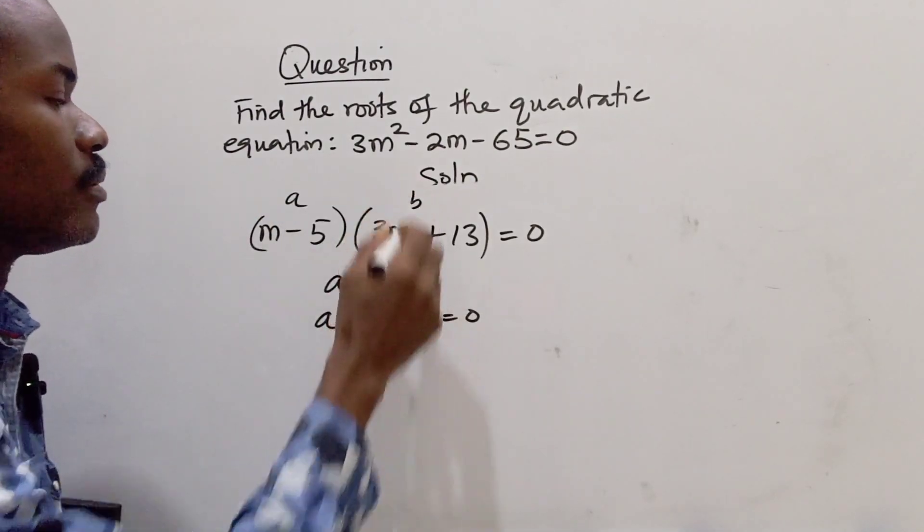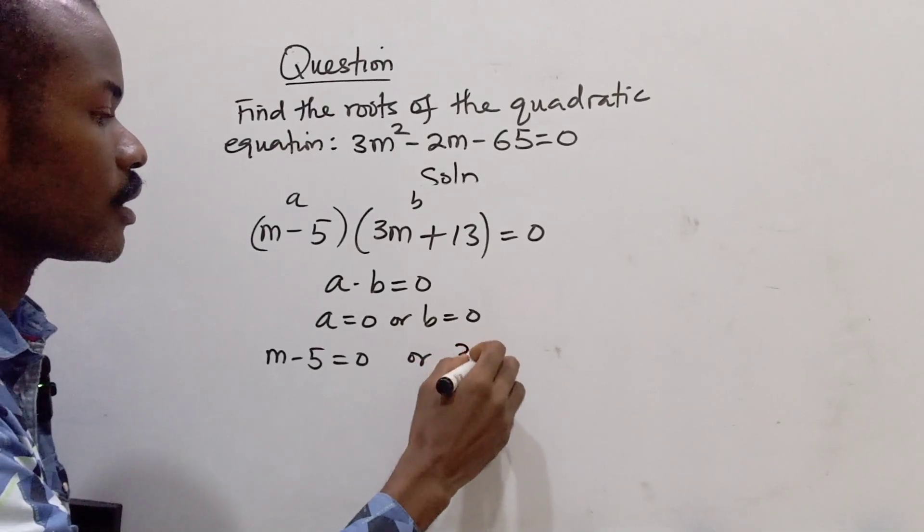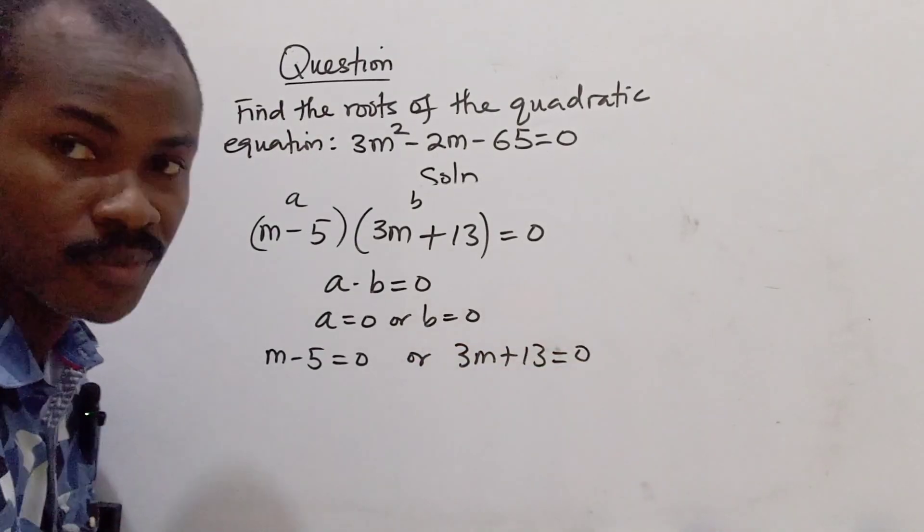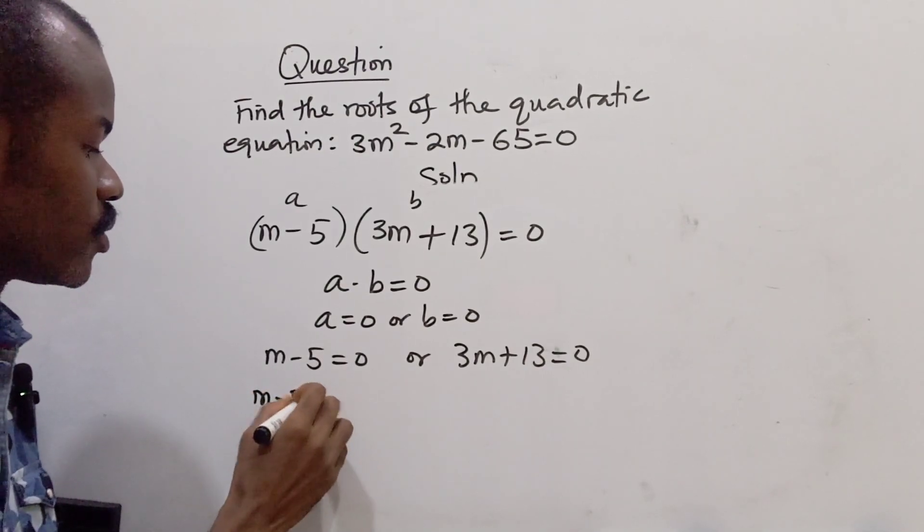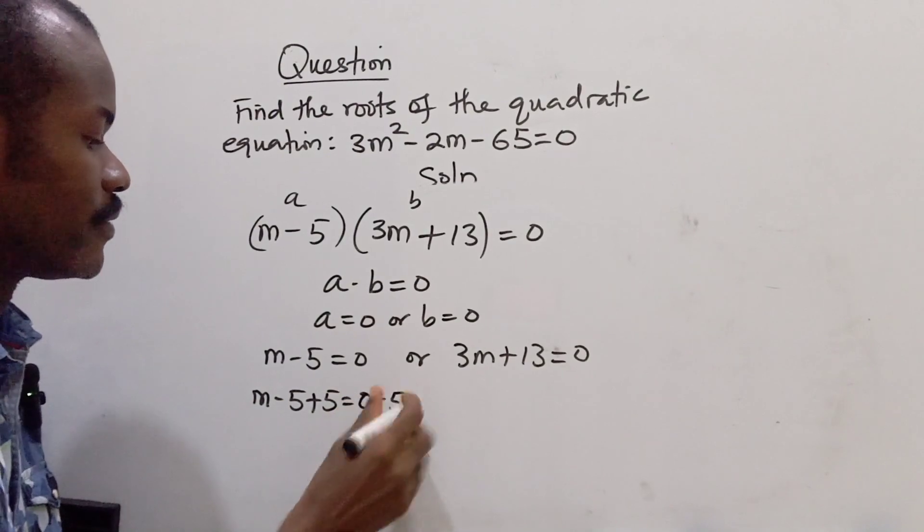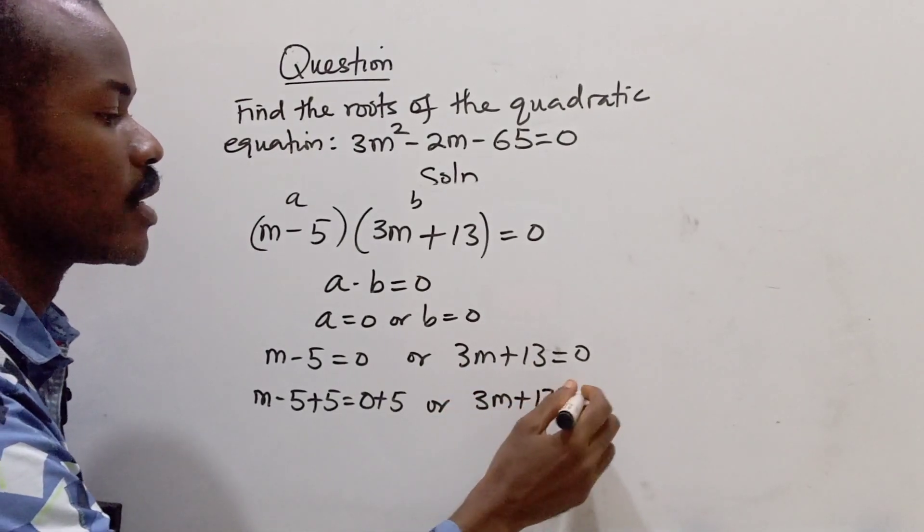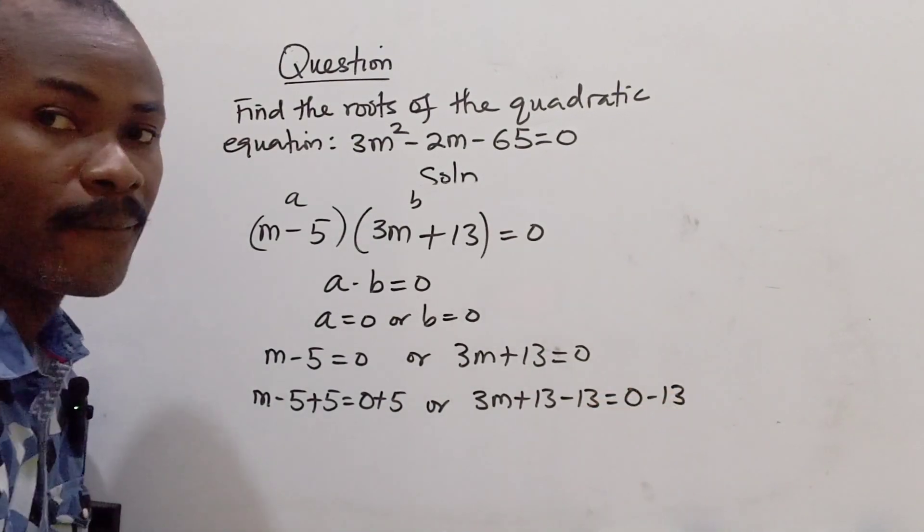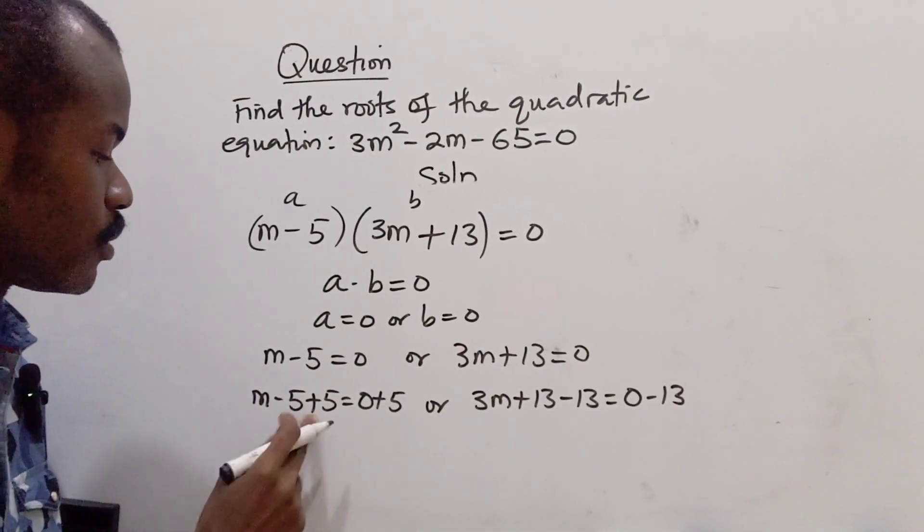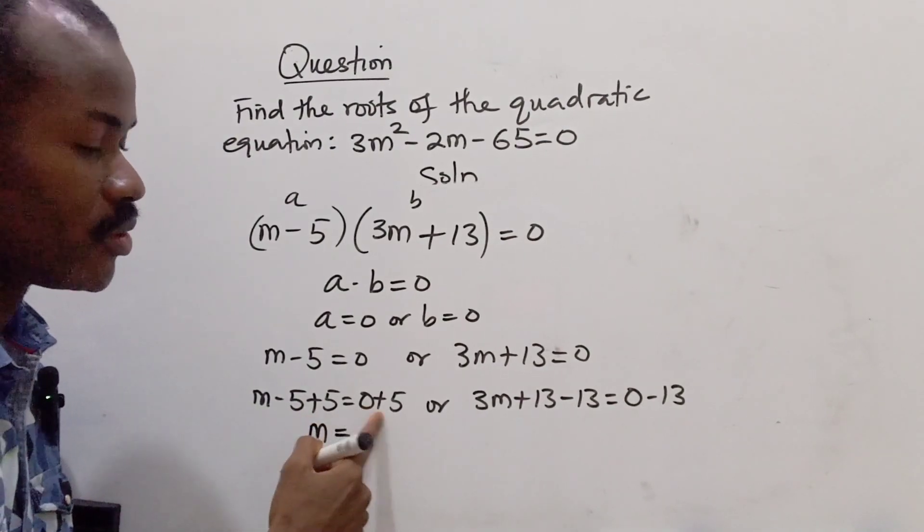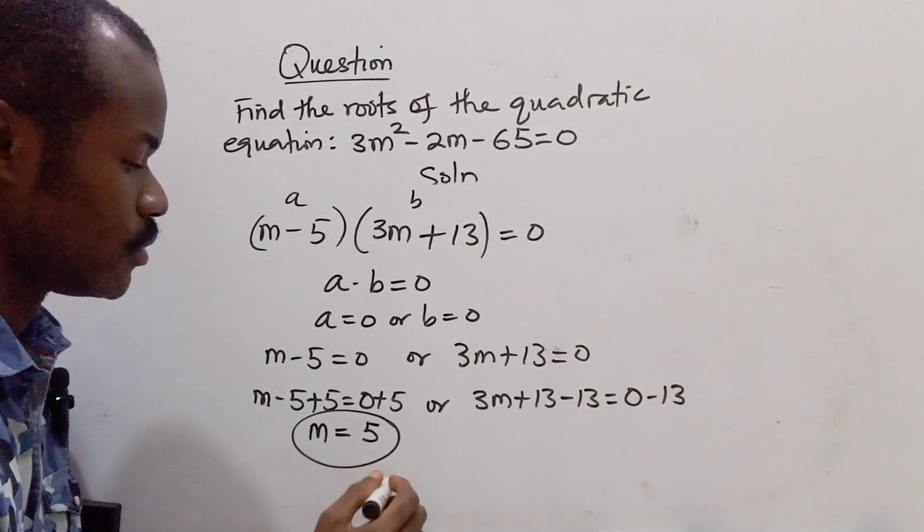So a is m - 5 = 0, or b is 3m + 13 = 0. From this we can now solve for m. For m - 5, we are going to add 5 here and add 5 here. This gives us -5 + 5 is 0, so we are left with m. m = 5. So this is one value of m, or one of the roots.